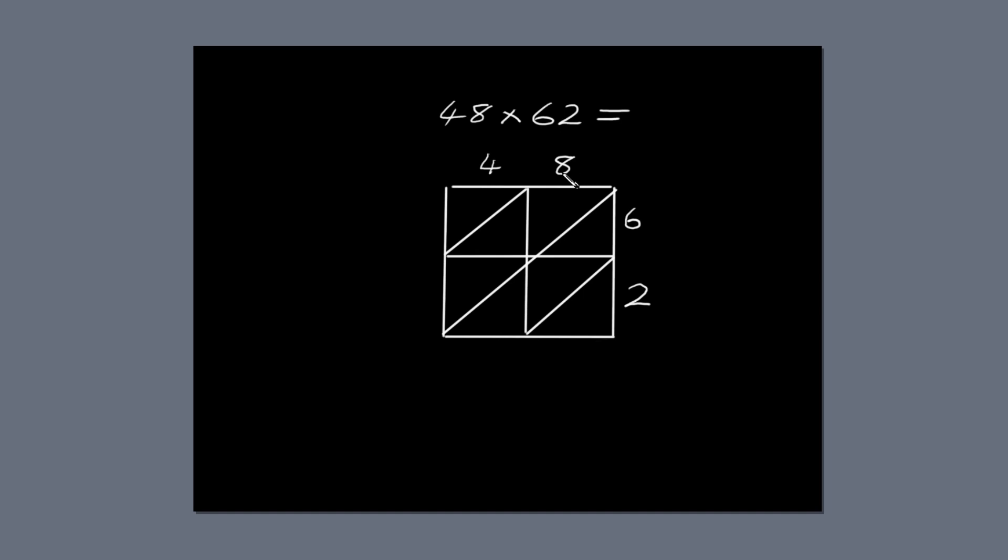Let's start with 8 times 6. That's 48. The 4 goes above the diagonal, and the 8 below. 8 times 2 is 16. Again, the 1 goes above the diagonal, and the 6 below.